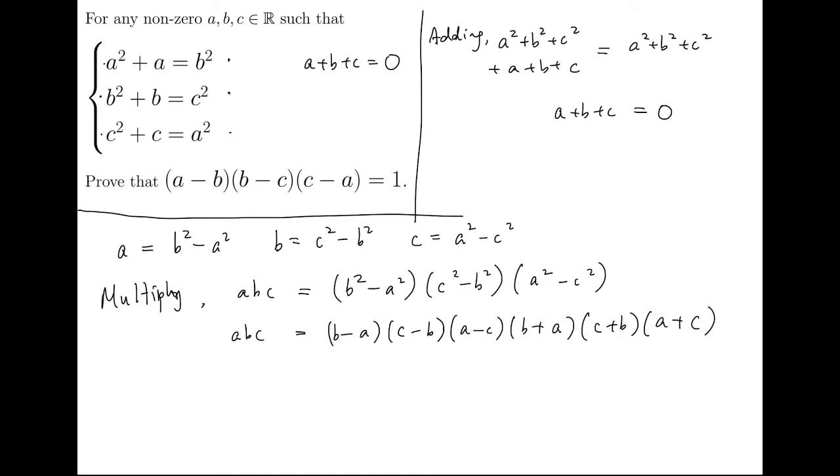But what about the terms at the back? b plus a, c plus b, and a plus c. Now we have to recall that we actually have the sum of these three terms, a, b, c, to be zero. And we can put them into each of these three terms.